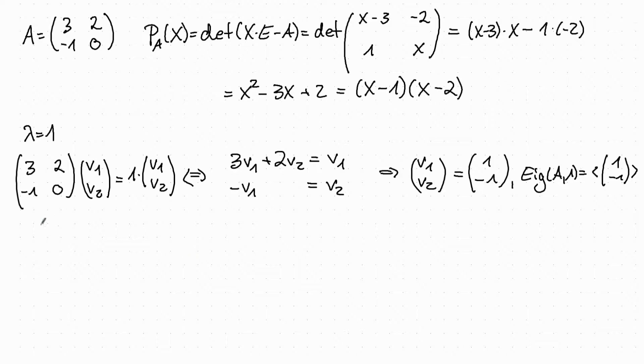Now we continue with the second eigenvalue lambda equal to 2. This gives us the following. So everything that changes is just this number here.